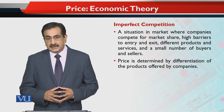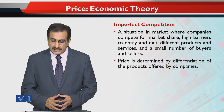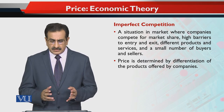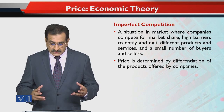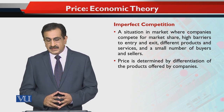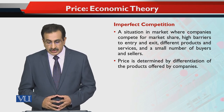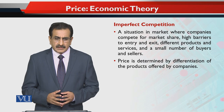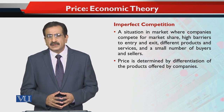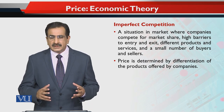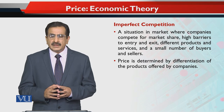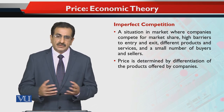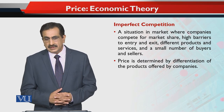There could also be imperfect competition — this is a situation in the market where companies compete for market share, with high barriers to entry or exit, different products and services, and a small number of buyers and sellers. Price is determined by the differentiation of the product offered by the company. Products are not exactly the same but are substitutes with different attributes, characteristics, features, shapes, and designs, which is why they can offer different prices.